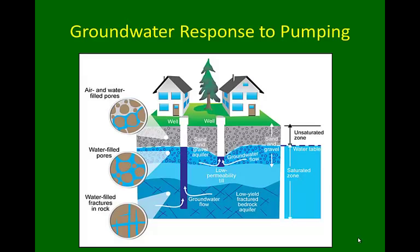How do we use groundwater as a resource? We have to pump it to places away from the natural discharge locations. Natural discharge locations include interactions with surface water bodies, as well as seeps and springs occurring in various places. Often we need to pump water to where we want it because those locations are very far from seeps, springs, or surface water bodies.